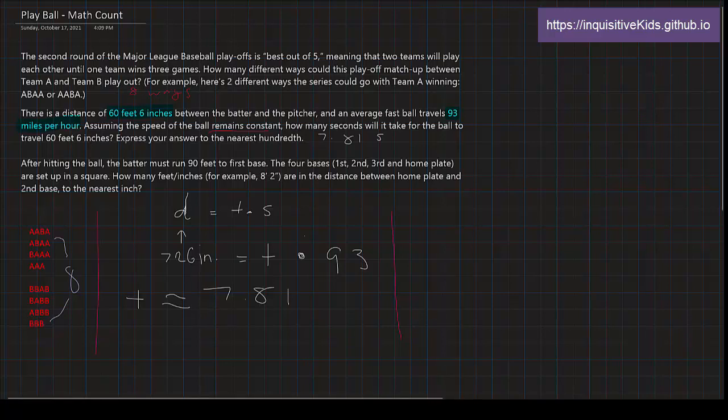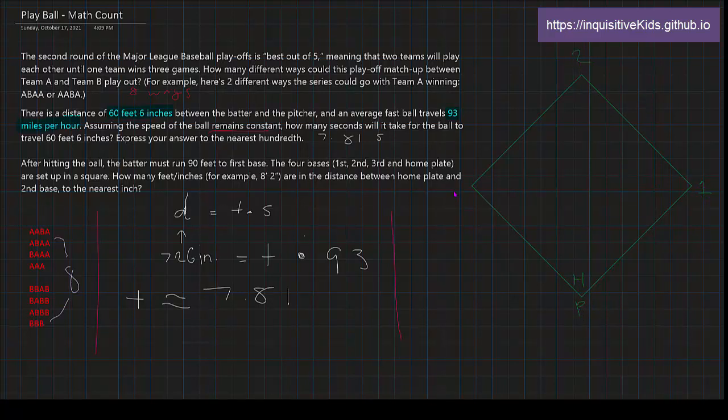Let's model this. I'm going to draw a square. So this is home plate. Over here is first base. Over here is second base. Over here is third base. And this is a square, so all of these are equal. So from home plate to first base, which is one side of the square, is 90 feet. So then, how many feet or inches are between home plate and second base?